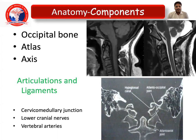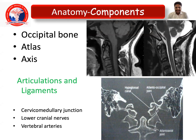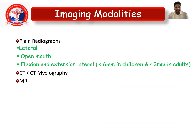Anatomy: the components include the occipital bone, atlas, and axis. The articulations and ligaments among these involve the cervical medullary junction, the lower cranial nerves, the vertebral arteries, the hypoglossal canal, the atlanto-occipital joint, and the atlanto-axial joints. A detailed understanding of this anatomy is essential to know the CVJ anomalies.